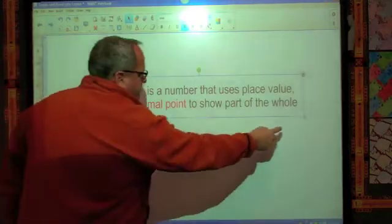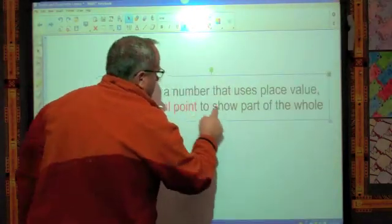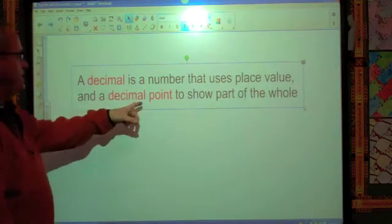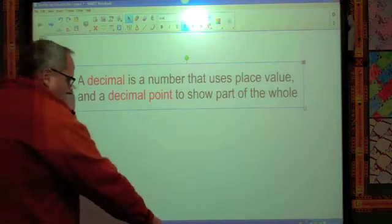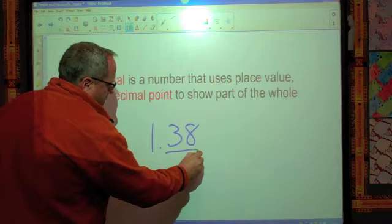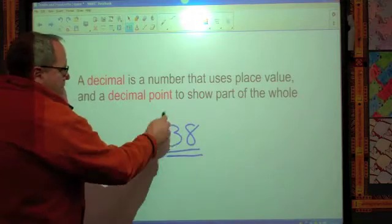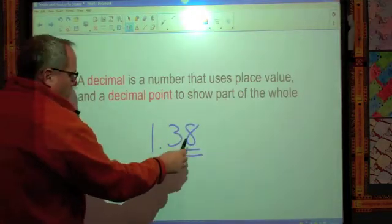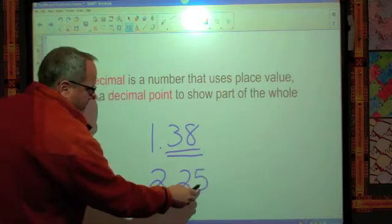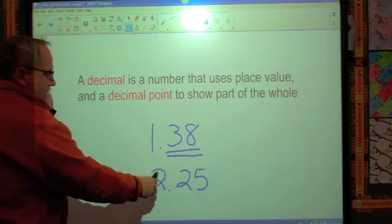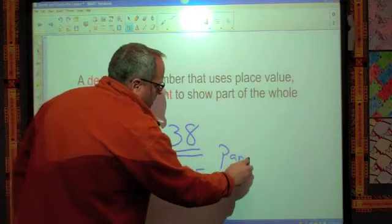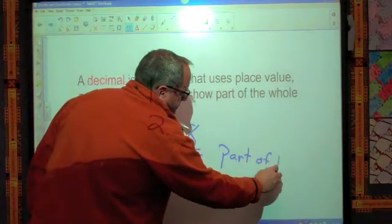First of all, one thing you need to know, I'm going to make that a little bit bigger. Hopefully you can see that a little bit better. A decimal is a number that uses place value and a decimal point to show part of a whole. Remember we talked about if I give you 1.38, this number here is a part of the whole. Or if I did it as 2.25, that 2.5 is a part of the next number. So anything to the right of the decimal is a part of the whole. Part of the whole.